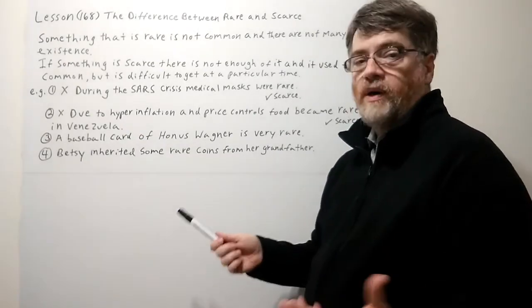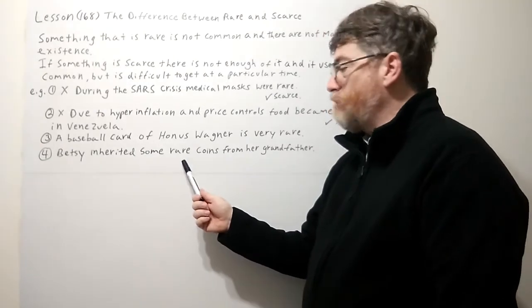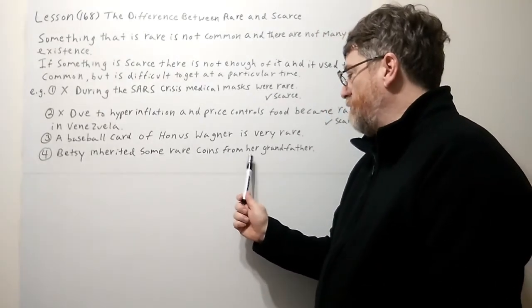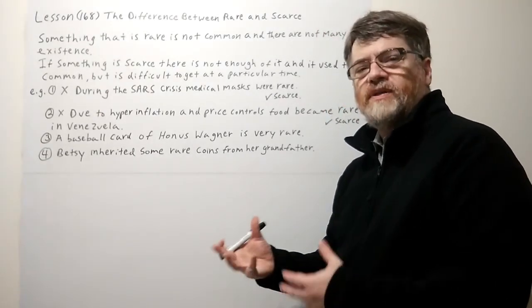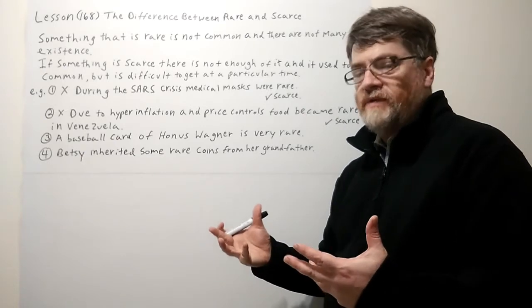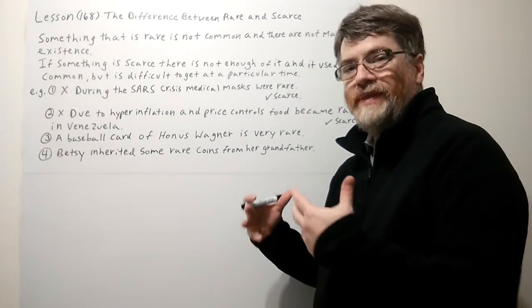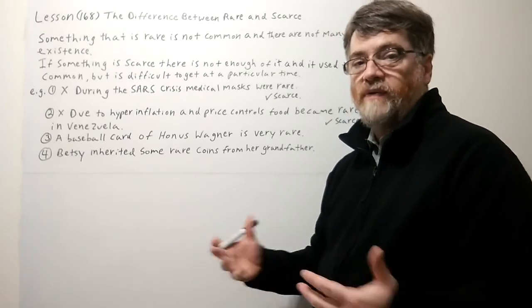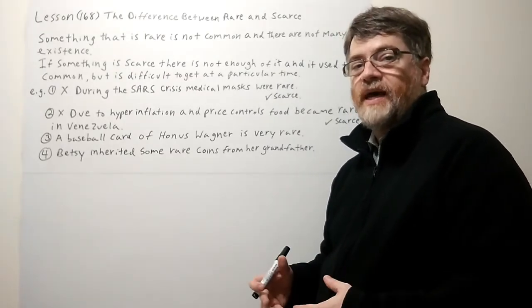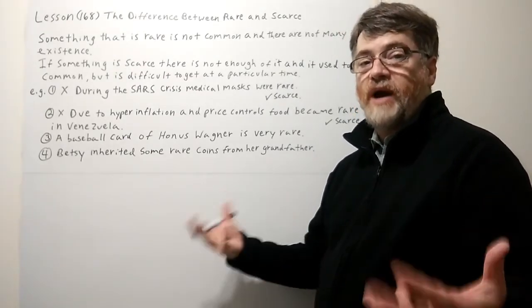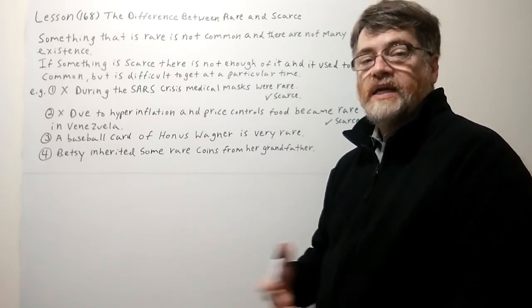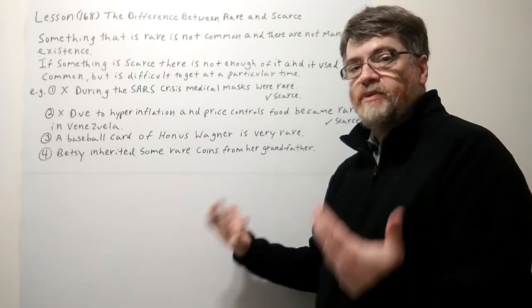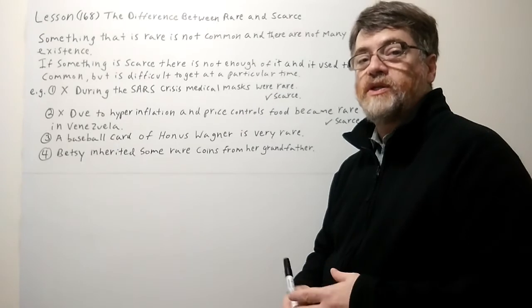And let's look at number four. Betsy inherited some rare coins from her grandfather. Again, if it's rare in this sense, maybe there was a limited edition when they bought it. So maybe there were only a thousand made or 500 made or something like that. And that's of course what makes them rare. So they're always rare. Scarce is usually only at a particular time and in a particular situation.